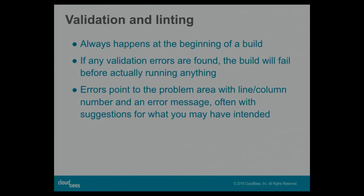The same validation applies to parameters: if you give an agent or a step the wrong parameter that doesn't exist, or you have the wrong type, it will tell you so you know what to fix. Errors point to the problem areas with line and column number, with a useful and internationalized — though not yet localized — error message, hopefully with suggestions to point you in the right direction.